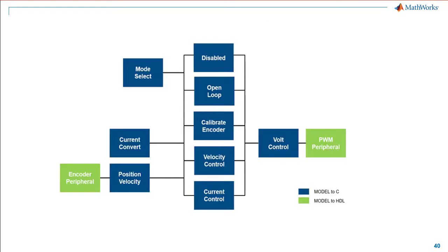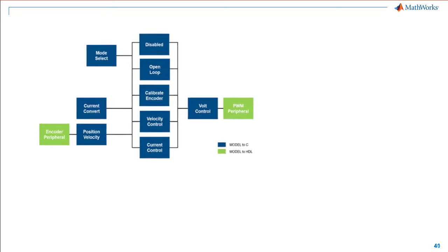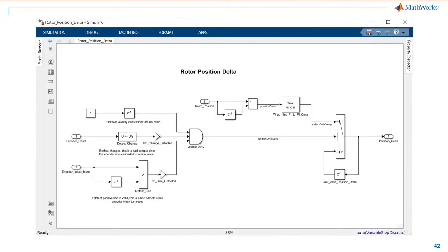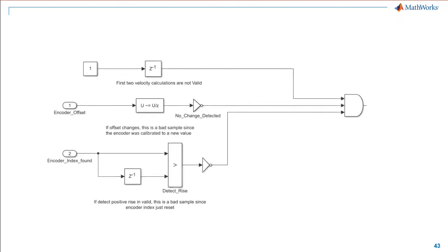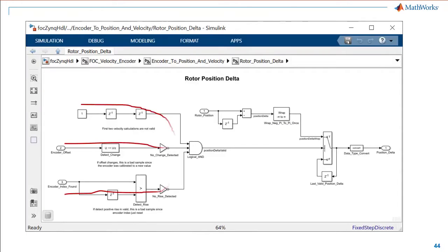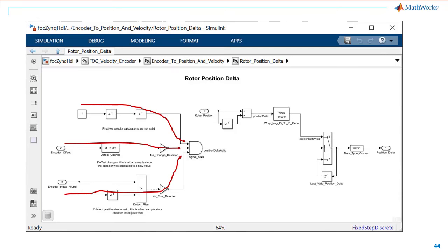Once the Simulink model is developed, partition the model into hardware and software atomic subsystems, or DUT. We have now introduced very fast dynamics into the original model. FPGAs can run in the megahertz region, and balancing the latency is crucial to propagate control signals through the hardware logic. HDL Coder inserts registers which ensure signals through the parallel paths are coordinated, and this process is automated.